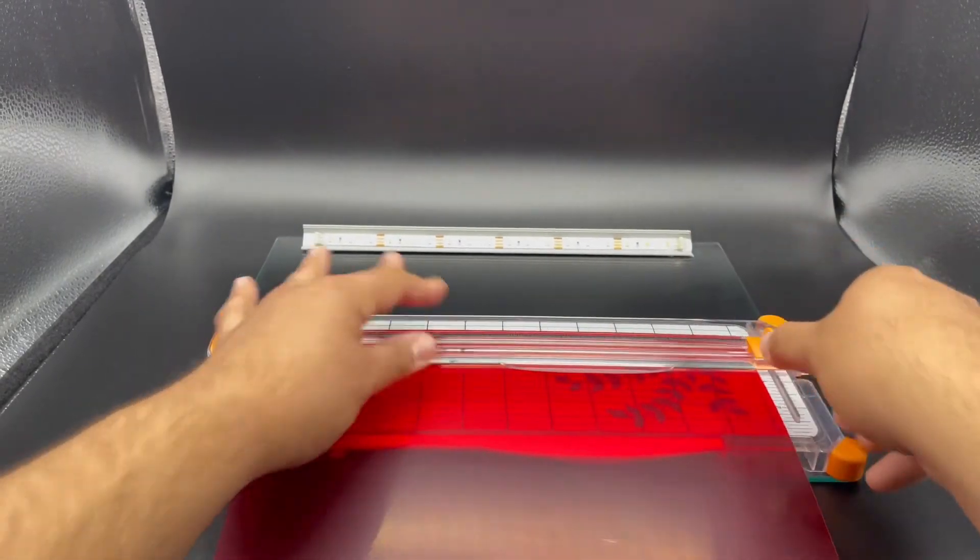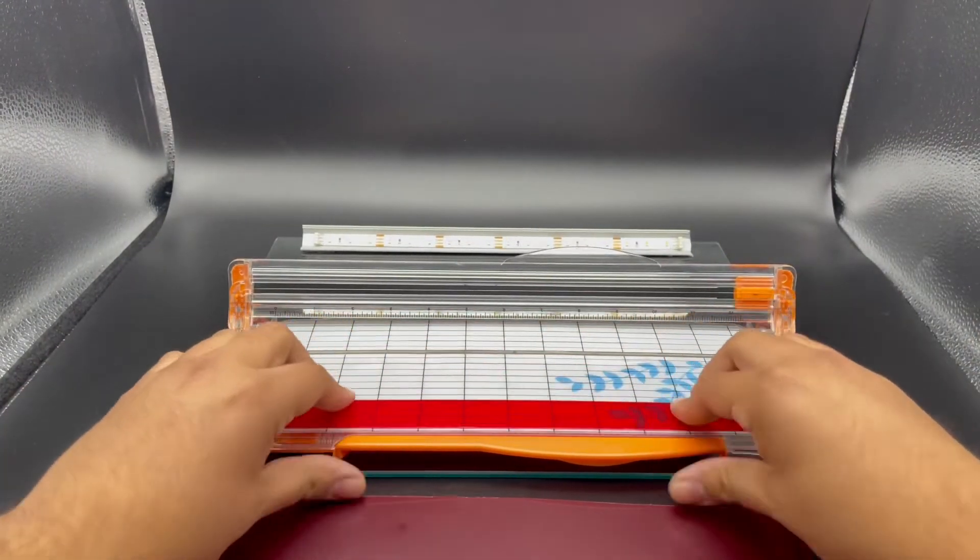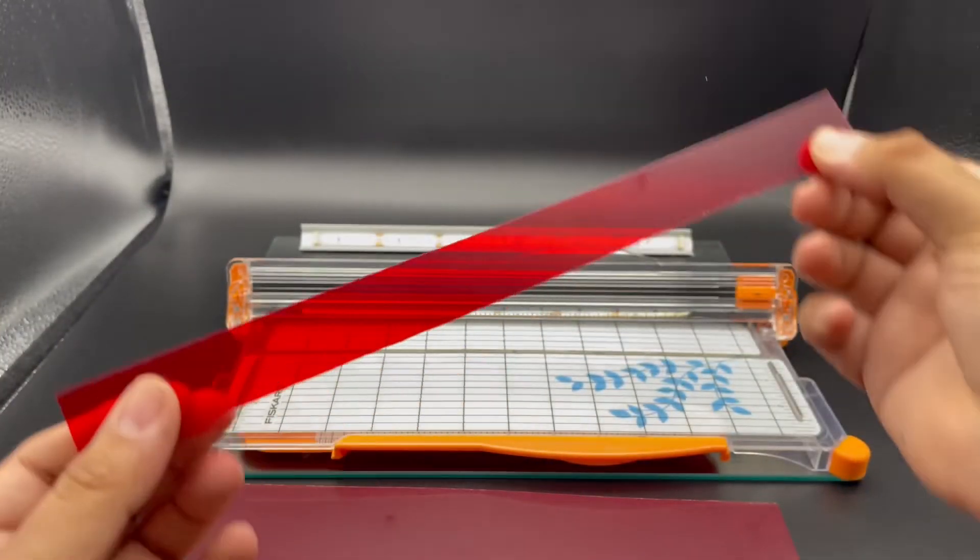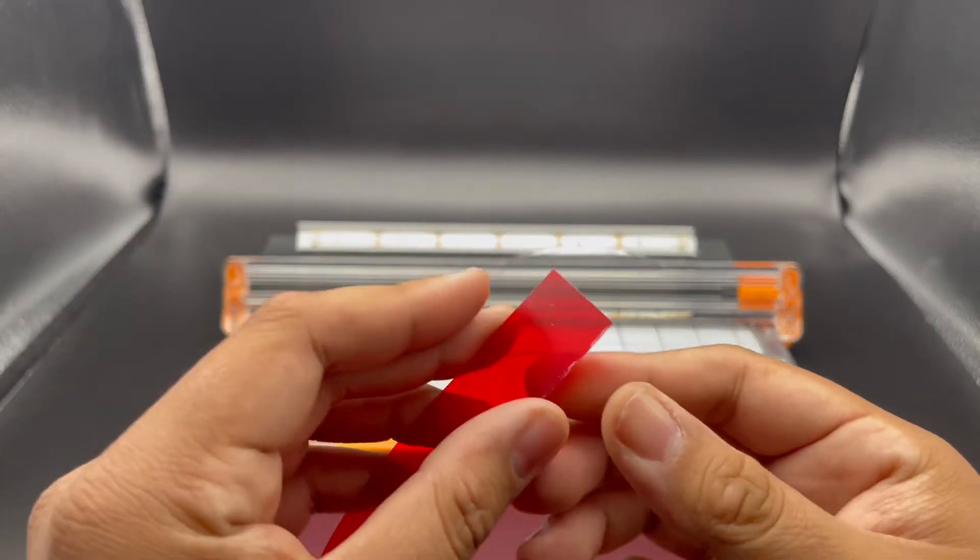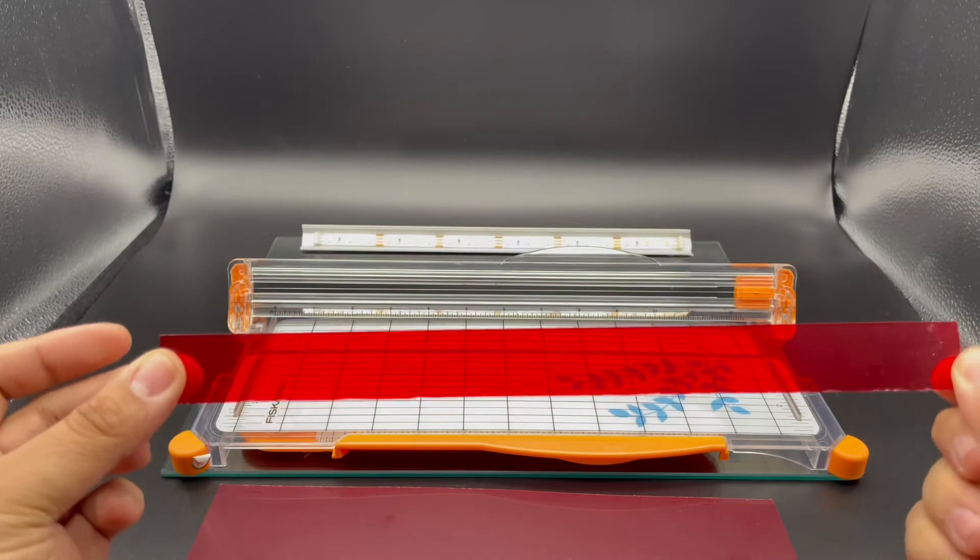It should be cut, yes it's cut. So you'll be left with this. It has some film on it, if you need to take off the film take it off so it's even more red. There's like a thin layer of plastic on here.